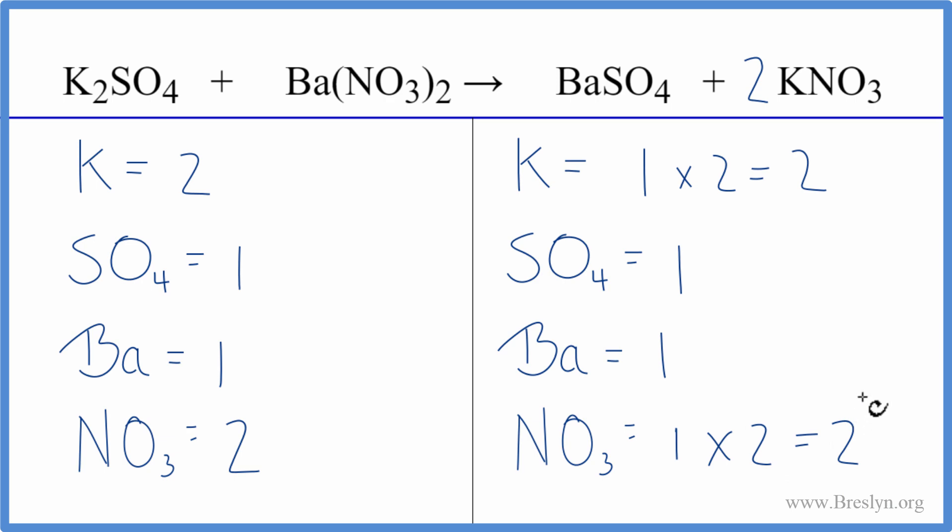So you can see the value of counting these polyatomic ions as one item if they appear on both sides of the chemical equation. This is Dr. B with the balanced equation for K2SO4 plus Ba(NO3)2. Thanks for watching.